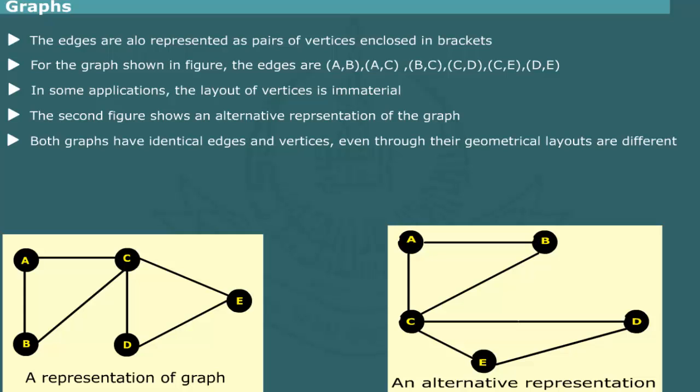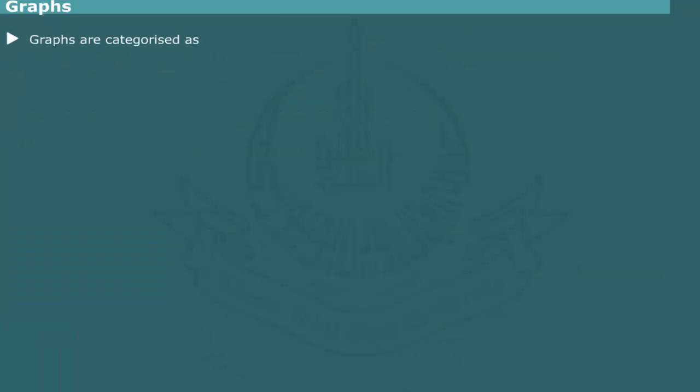Graphs are classified on the basis of properties of the edges and their orientation. The major categories are undirected, directed, weighted, and multigraph. We now briefly overview the salient features of each type.